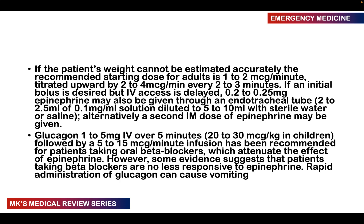If the initial bolus is desired but IV access is delayed, 0.2 to 0.25 milligrams of epinephrine can be given through the endotracheal tube — that's about 2 to 2.5 mL of the 0.1 mg/mL solution diluted with 5 to 10 mL of sterile water or saline. Alternatively, a second dose of epinephrine IM can be given.